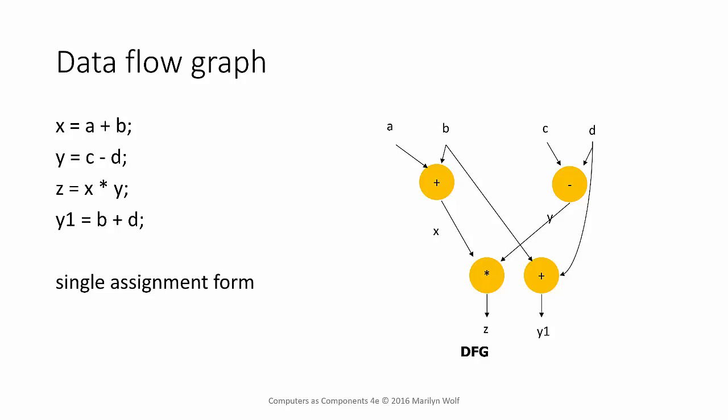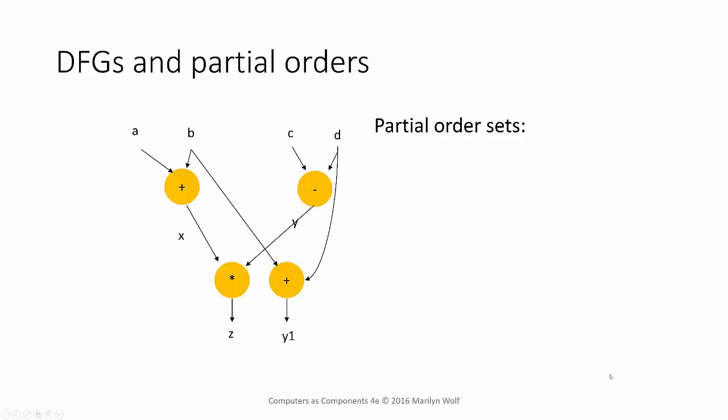We can see much more clearly here that we have some freedom in the order in which we perform these operations. We clearly can't perform the multiplication or the addition used for Y1 until we finish the first two operators. But we can do those two operators in whatever order we want, and we can do the bottom two operations in different orders. For example, we could perform A plus B and C minus D on a machine that can do two arithmetic operations at once. Then, because we have the values we need, we can compute B plus D and X times Y.